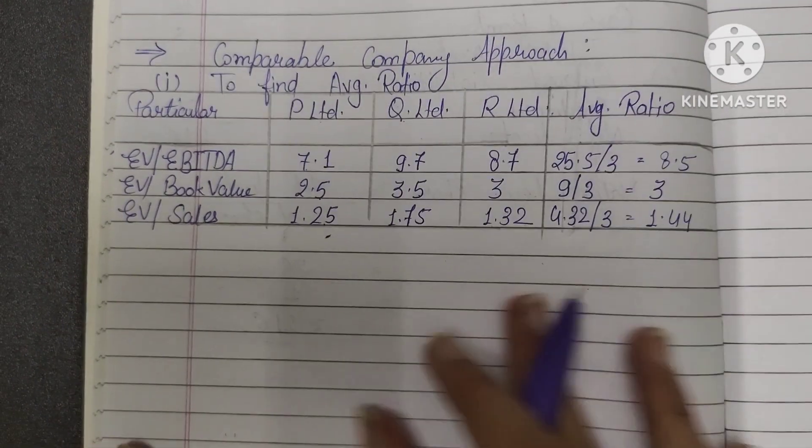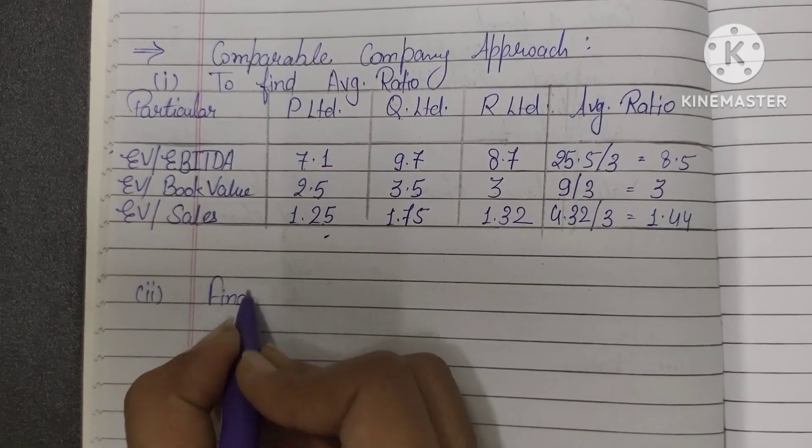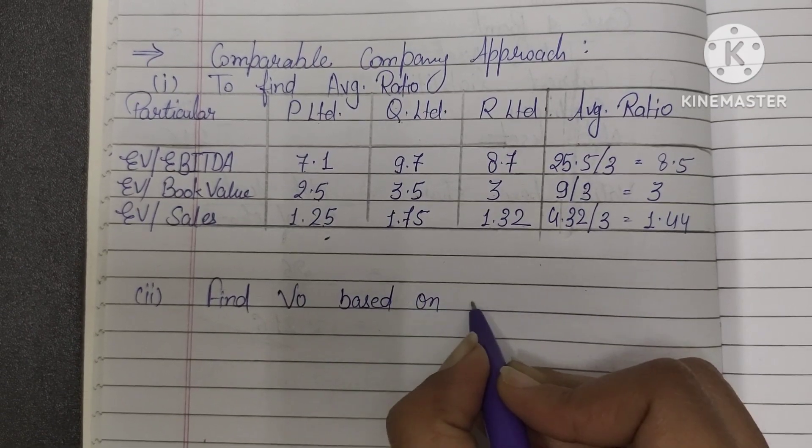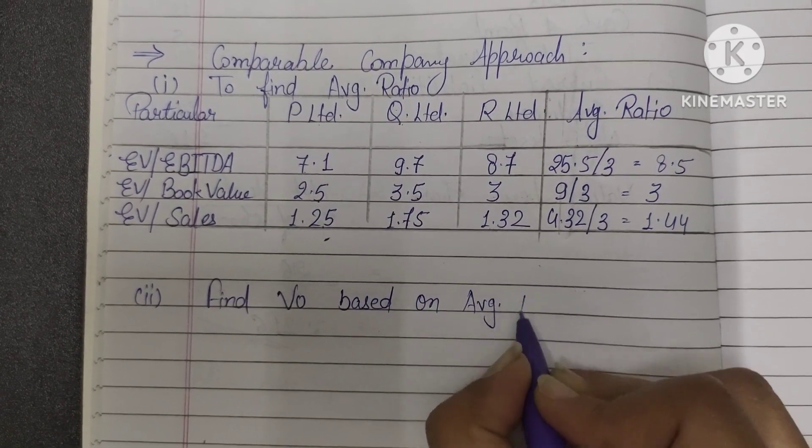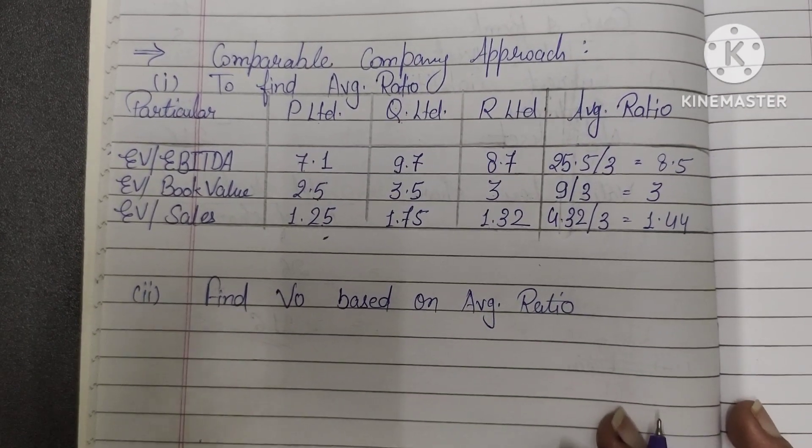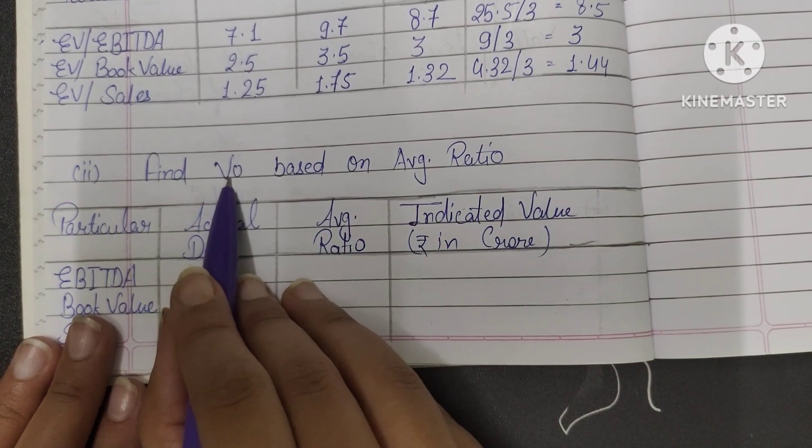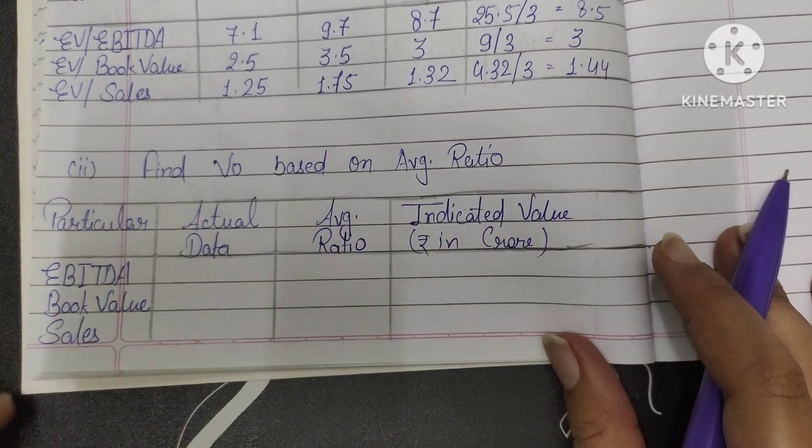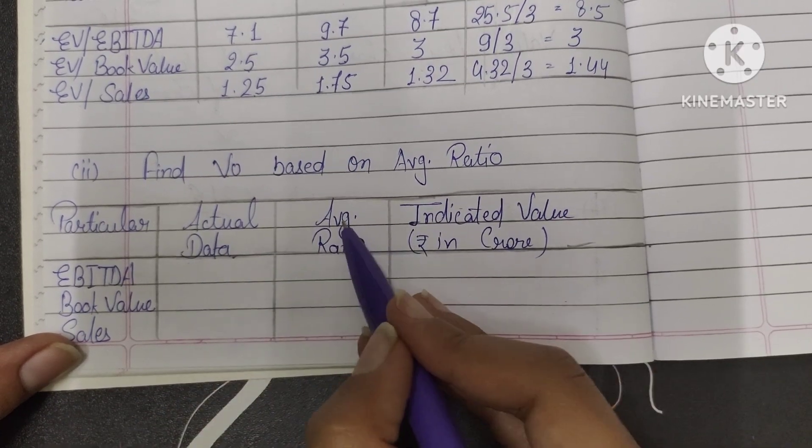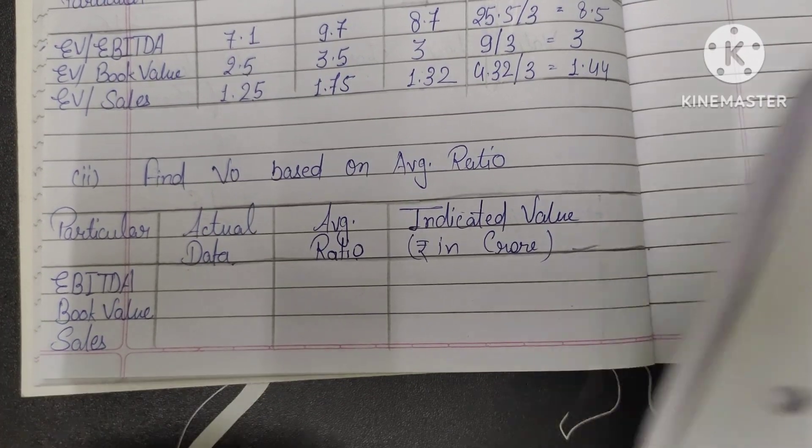Value of business based on average ratio, it is our average ratio. Second step, what did we learn? To find out value of business based on average ratio. Now we will calculate second step, that is value of business.